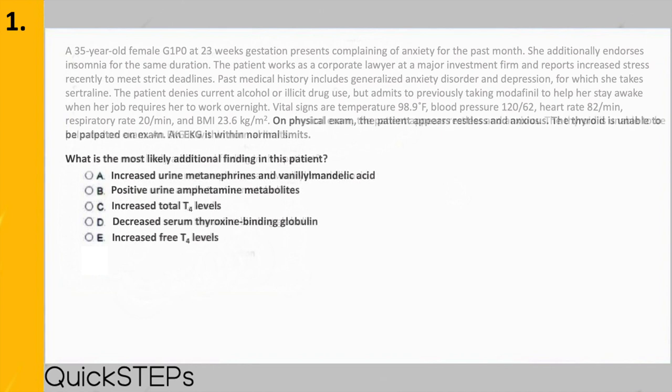Now let's read the question itself and the answer choices: what is the most likely additional finding in this patient? A) increased urine metanephrines and vanillylmandelic acid; B) positive urine amphetamine metabolites; C) increased total T4 levels; D) decreased serum thyroxine binding globulin; or E) increased free T4 levels. Without reading the entire question, we've gathered that this is asking for an associated finding in a patient who appears restless and anxious but does not have an enlarged thyroid or EKG changes.